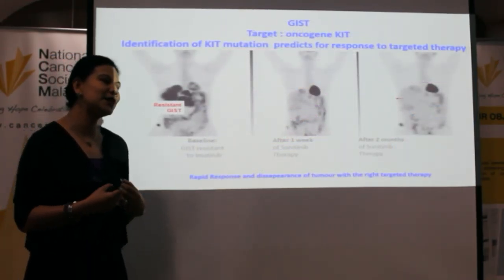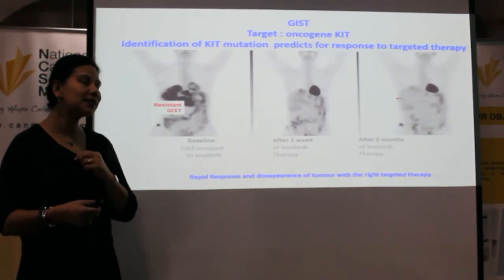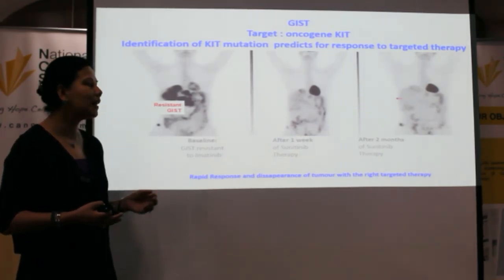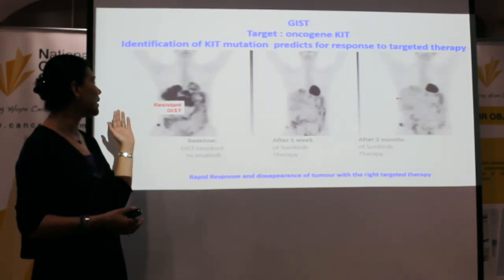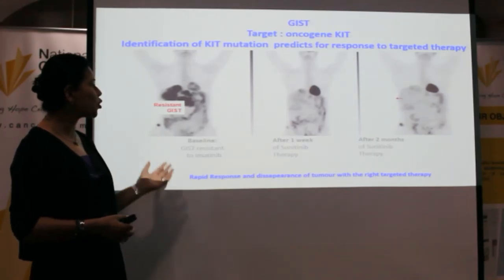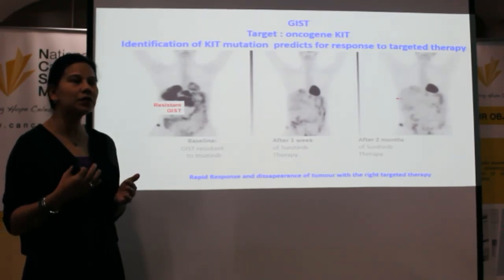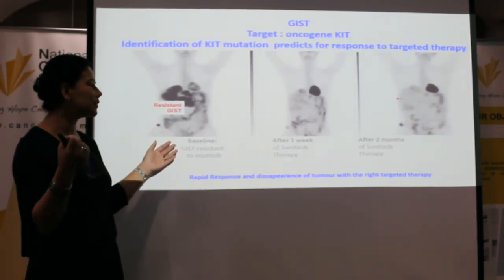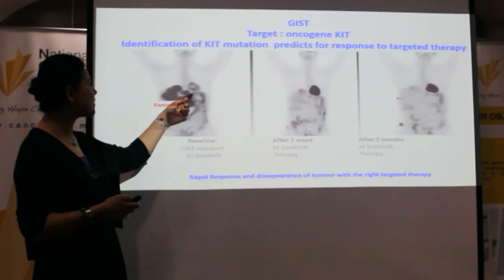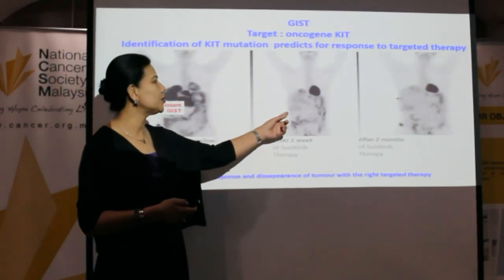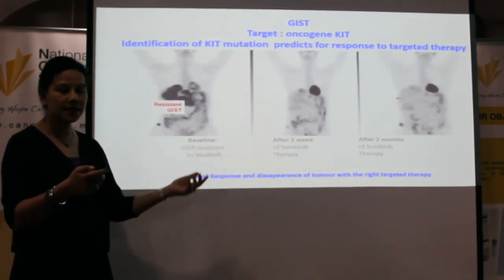An excellent example of targeted therapy success is GIST — gastrointestinal stromal tumor. The target is the oncogene KIT, which is mutated in this tumor. When identified, we can treat it with imatinib. GIST is typically resistant to chemotherapy and radiotherapy, but with targeted therapy the patient can achieve a very good response. In one case, cancer in the liver disappeared after just one week of treatment, and was completely gone after two months.